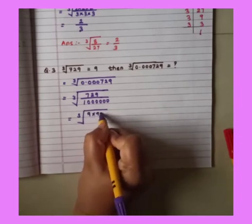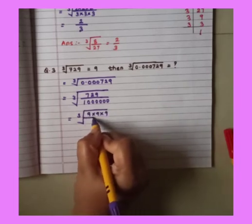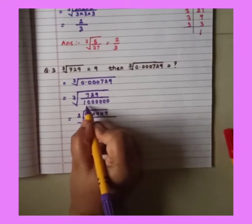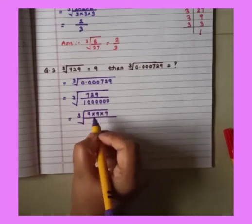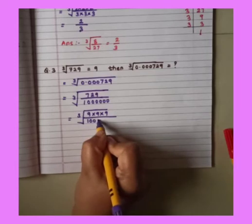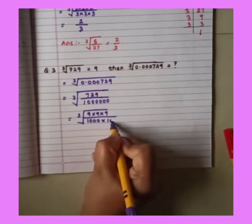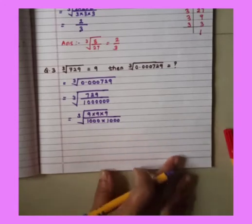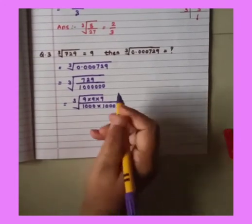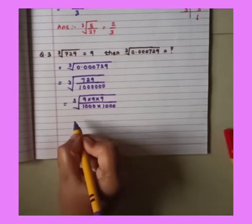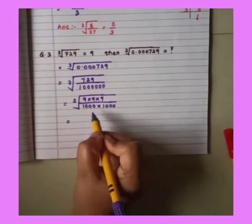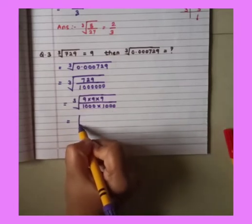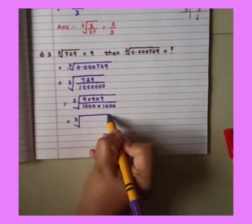So, 9 into 9 into 9. Now, this number, this 1 lakh we can write as 10,000 into 10,000. Okay sorry, 1000 into 1000. Understood? Now see here. Be careful. See properly.